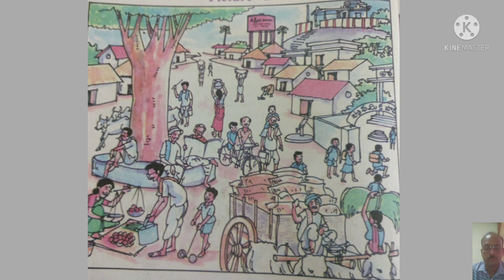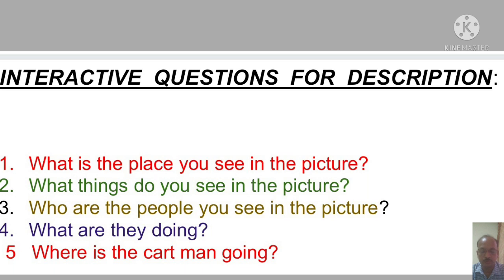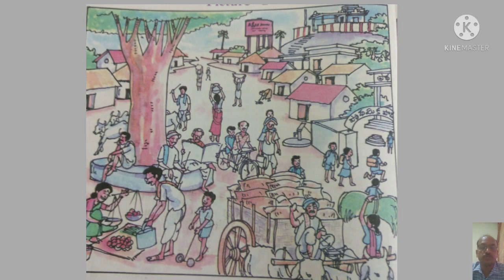Now look at the picture thoroughly. I will put to you some interactive questions for writing the description. The first question: what is the place you see in the picture? I hope you are all well aware of that place and may have experienced it. The next question: what things do you see in the picture? The third: who are the people you see in the picture? The fourth: what are they doing — what are the people doing in the picture? And the last: where is the cart man going? Dear children, I hope you have observed the picture very keenly and have noted in your mind some of the things, persons and places.